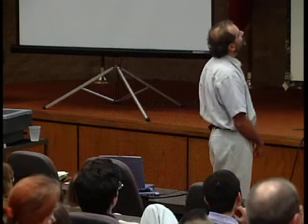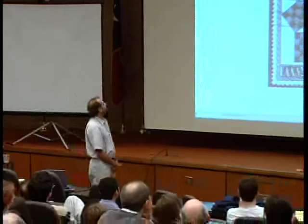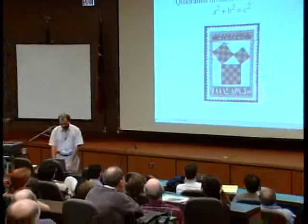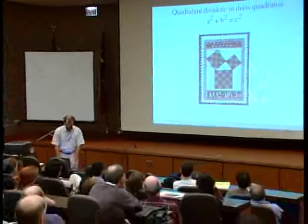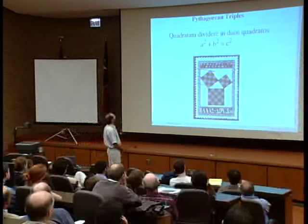Let's go back to this problem of Diophantus — problem number eight in book three. Quadratum dividere in duos quadratos. So we want integers a, b, and c such that a² + b² = c². This should remind you of Pythagoras' theorem. In fact, this is a very old type of question that goes back to Pythagoras. Such solutions go by the name of Pythagorean triples.